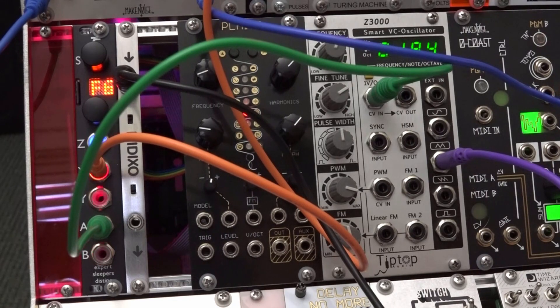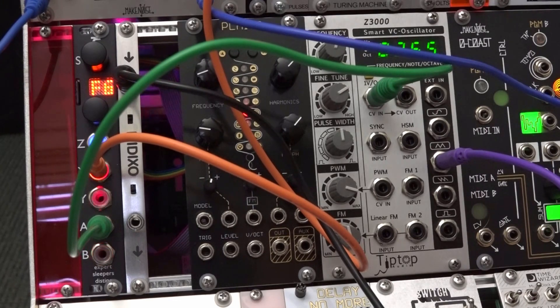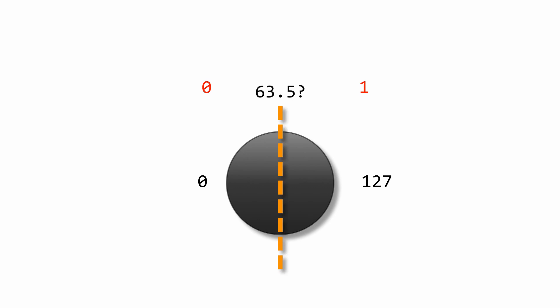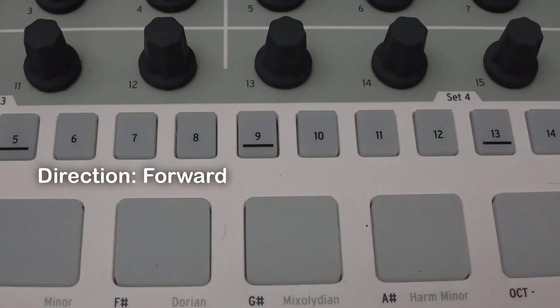Back in the Turing machine algorithm, I can wiggle the different encoders on the BeatStep Pro and change parameters like attenuation, length, direction, and transposition. Something you'll notice right away is that the first time you turn one of these encoders, it might send a value way different from what the parameter was already set to — causing an extreme change. Also, a parameter like direction that only has two possible values — 0 or 1 — doesn't change until you get past the halfway point on the encoder. Once you find that midpoint, you can wiggle it back and forth for fine control, or use a button to toggle between the two values.